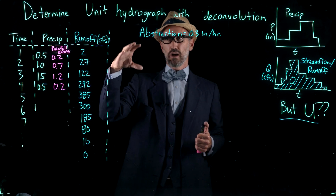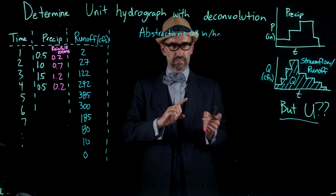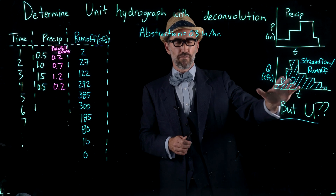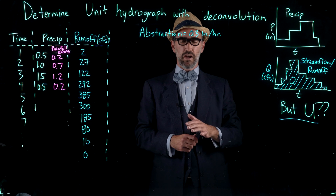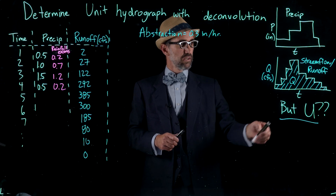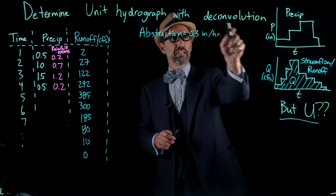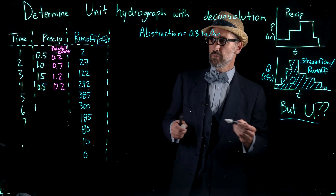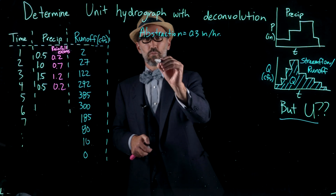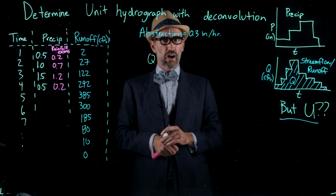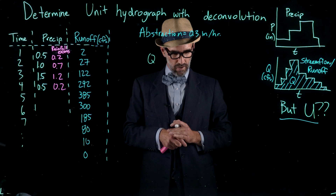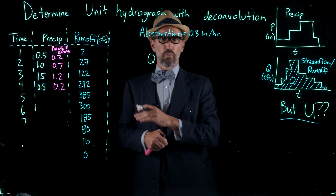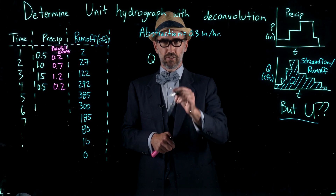We have measured the runoff at some stream gauge, and we're going to use these two things — and the fact that we can convolve them as we did in the last exercise — but in this case, we're going to deconvolve these two functions. As we've learned in class, we create our unit hydrograph by multiplying our excess rainfall with the unit hydrograph.